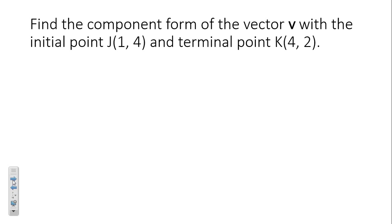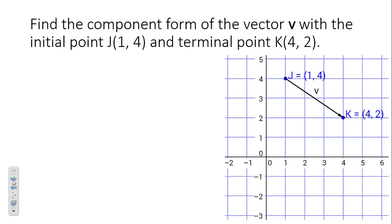To find the component form of vector v — the textbook bolds all vector names — with an initial point at (1, 4) and a terminal point at (4, 2), we want to translate it back to the origin algebraically. We subtract the initial from the terminal: terminal minus initial.